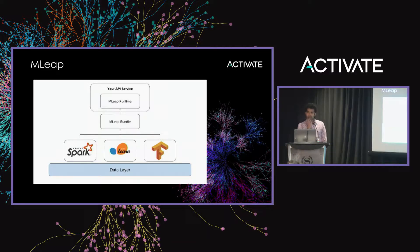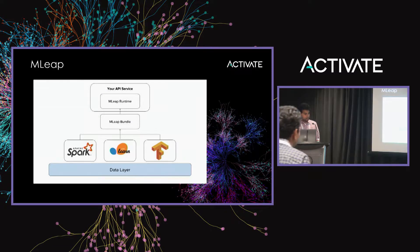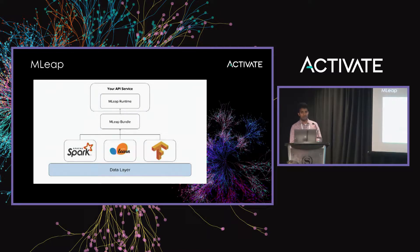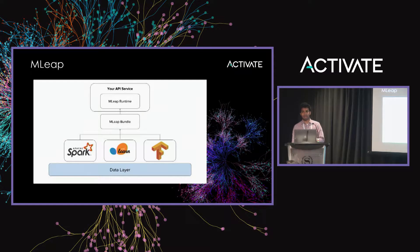Here is a simplified diagram of what MLEAP offers. It sits on top of Spark, scikit-learn, and TensorFlow. You don't need to change the way you're training the model — you can keep it the same. But at the end of training, instead of exporting it in a Spark parquet format, you can change it to use an MLEAP bundle. MLEAP works seamlessly — it's a few lines of code change where you say, export it as an MLEAP bundle, and once exported, you use the MLEAP runtime library to start serving predictions.